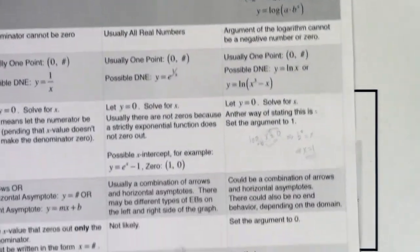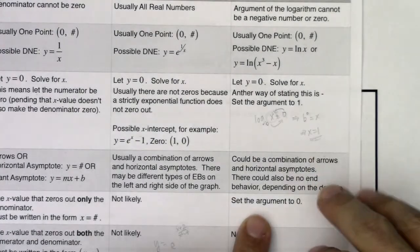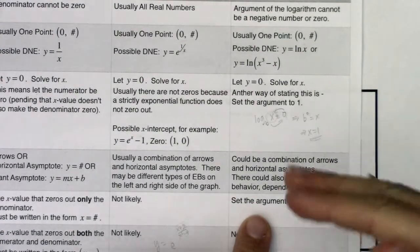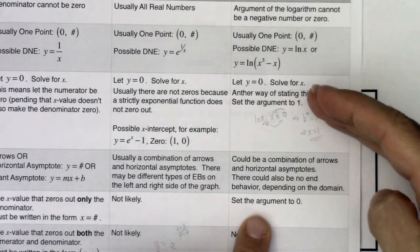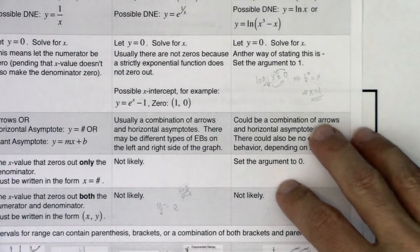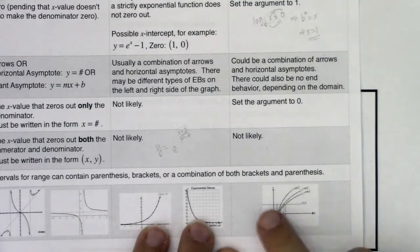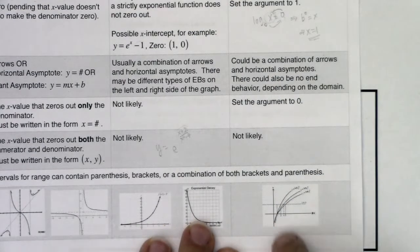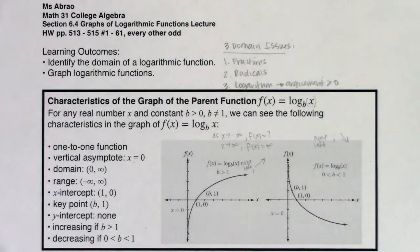For vertical asymptotes, they occur wherever your argument is zero. So we frequently set our argument to zero to find vertical asymptotes, and set our argument to one to find x-intercepts. Holes won't be likely unless the argument is a rational function. Logarithmic growth is very, very slow — logs grow ridiculously slow, whereas exponential functions grow ridiculously fast.